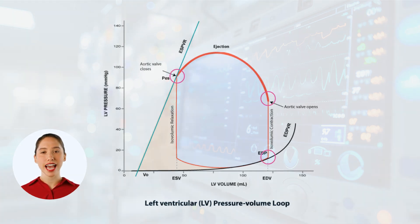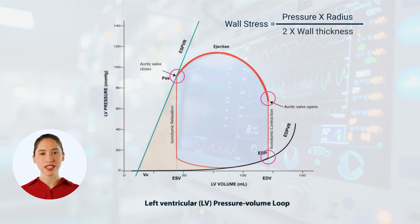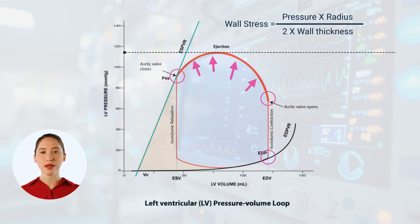Since we are defining afterload as the left ventricular wall stress during ejection, and if you remember, wall stress can be calculated using the formula: pressure during ejection multiplied by the radius of the left ventricle during ejection, divided by 2 times the wall thickness during ejection. Based on this formula, if we ignore wall thickness and the radius, you would say afterload can be inferred by the ejection pressure.